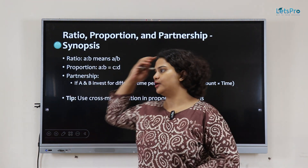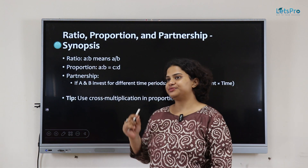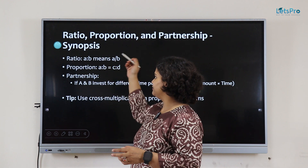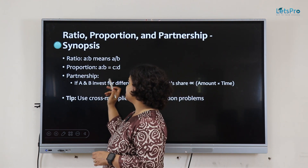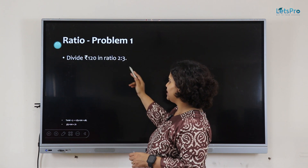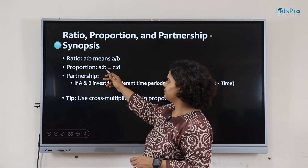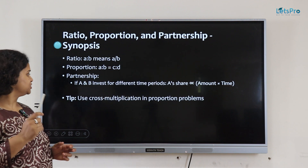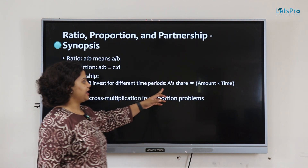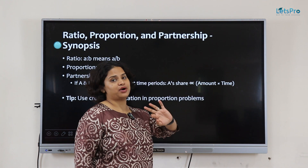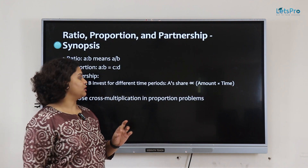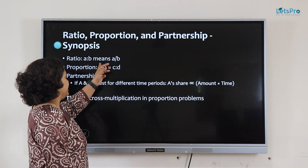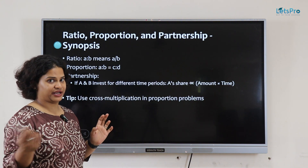Ratio, proportion and partnership. Ratio means A is to B, which means there is a relationship between A and B — we express it as A divided by B. Proportion involves 4 variables: A into D equals B into C. Partnership: if A and B invest for different time periods, A's share is directly proportional to amount times time. Use cross multiplication in proportion problems — A into D equals B into C.